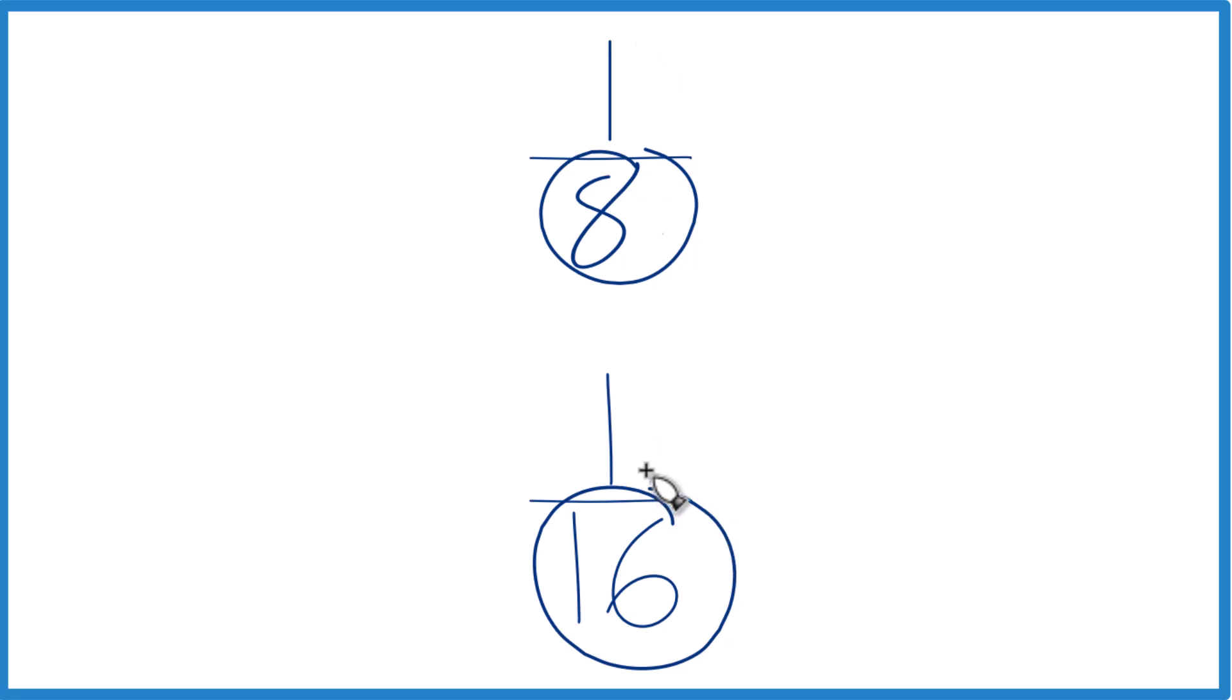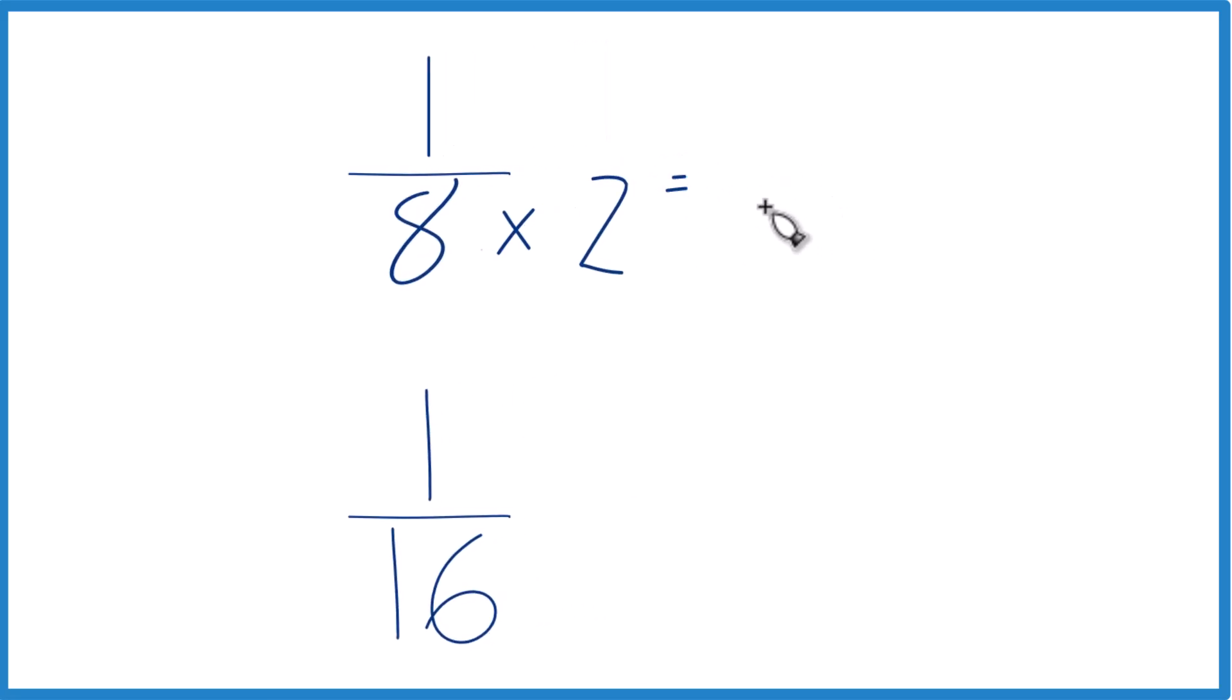Let me just compare the numerators. So eight times two, that equals sixteen. And down here, we already have sixteen, so let's just keep this the same.